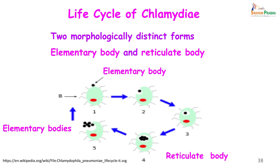Chlamydia exist in two morphological forms: the infective elementary body and the reticulate body which multiplies by binary fission. The elementary body comes in contact with the cells of the respiratory system, is ingested by endocytosis, and within this vacuole it gets converted into the reticulate body, which multiplies by binary fission and releases multiple elementary bodies that are infectious and will then infect the surrounding cells.